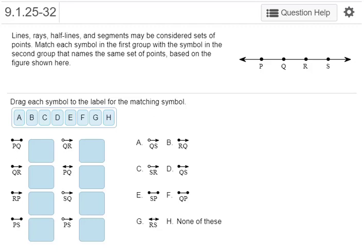In this video, we're going to name lines, rays, half lines, and segments in multiple ways. This exercise was taken from MyMathLab. We're supposed to match each symbol in the first group with a symbol in the second group that names the same set of points based on the figure.